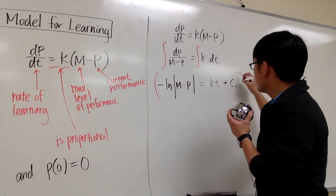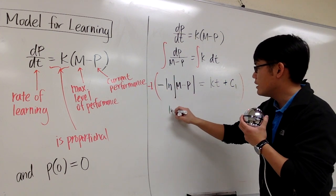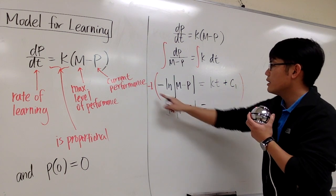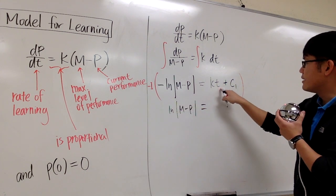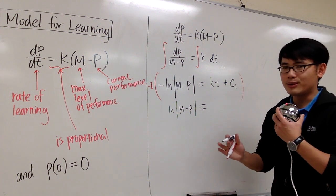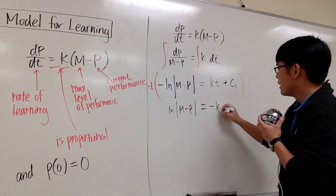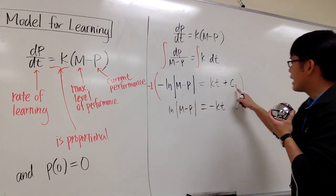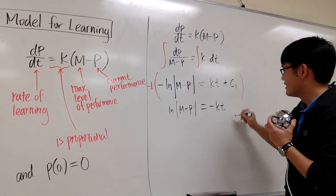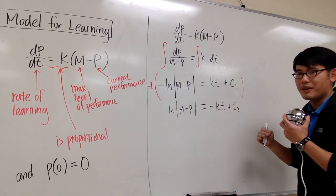So let's multiply everything by negative 1, so I can get rid of this negative. And I will have ln absolute value m minus p, and this will be negative 1 times kt. Well, k is preset, so I'm not going to call that k2 or something, I'm just going to put this as negative kt. But then negative 1 times c1, I have the right to make that into a c2, so I'll just put a plus c2.